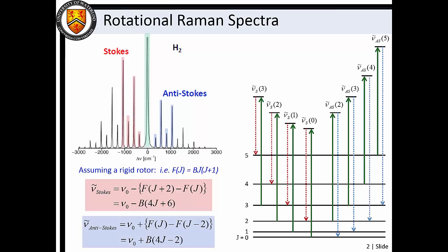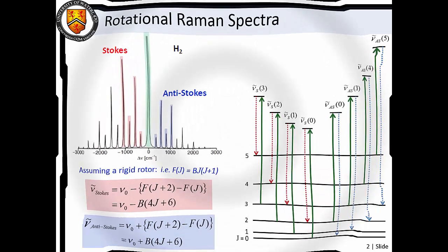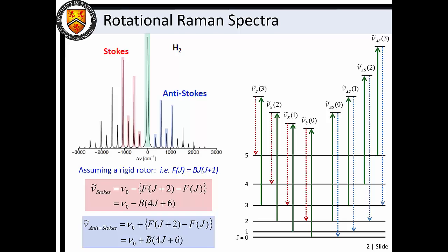We can also prepare a general solution to calculate the wavenumber of these transitions, where nu0 is the laser wavenumber and j is the j value of the initial state. However, if we instead set j as the j value for the lower energy state, we see that the anti-Stokes scattered photons gain the same energy that is lost by their Stokes counterparts.